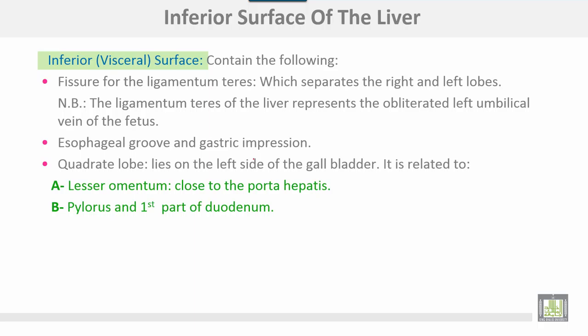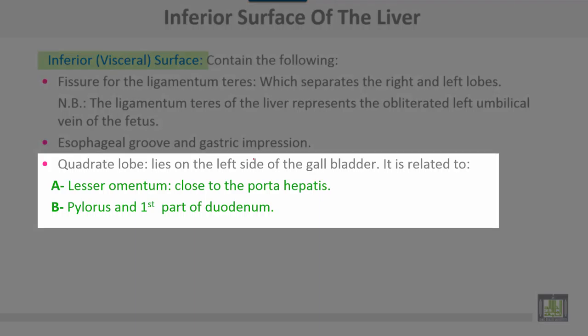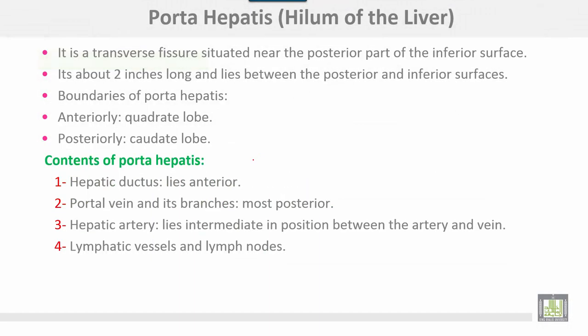The ligamentum teres of the liver represents the obliterated left umbilical vein of the fetus. The visceral surface also shows the esophageal groove and gastric impression. The quadrate lobe lies on the left side of the gallbladder and is related to: the lesser omentum close to the porta hepatis, the pylorus, and the first part of the duodenum.